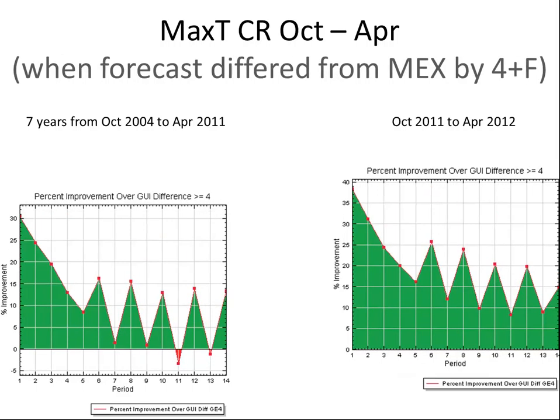This slide covers situations where our forecast was at least four Fahrenheit different on max temperatures than the MEX guidance. We deviated significantly from MEX guidance and you see across-the-board improvements. Whereas in the past, especially at the odd periods — seven, nine, 11, and 12 — we were either similar or even lost to MEX guidance on average, now we're talking about ten percent or more improvements, which is very impressive.